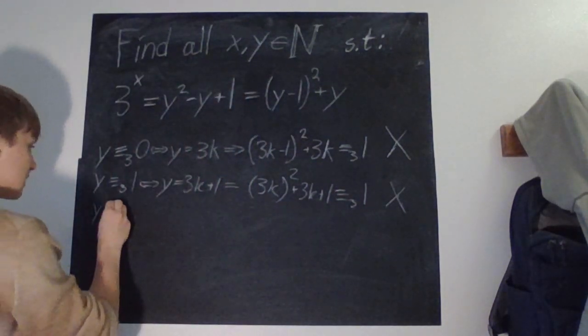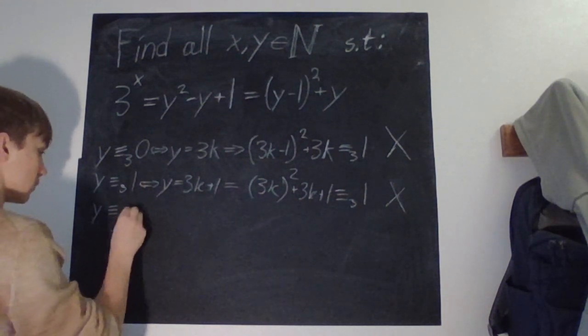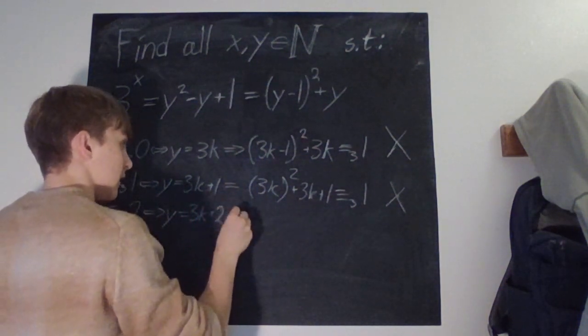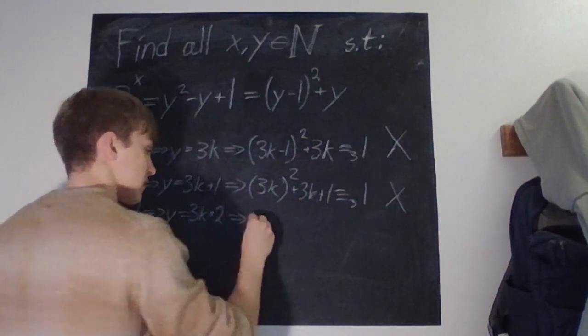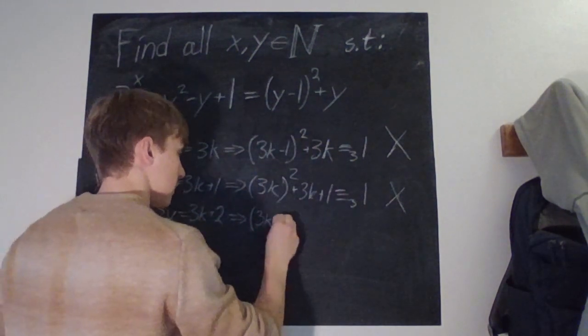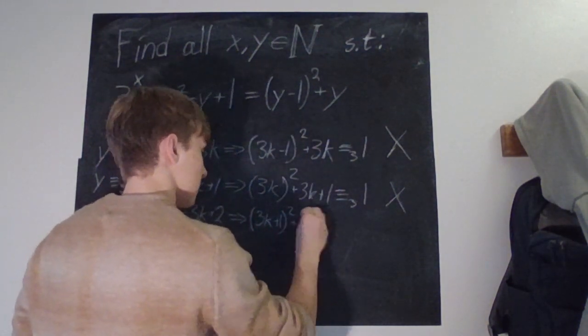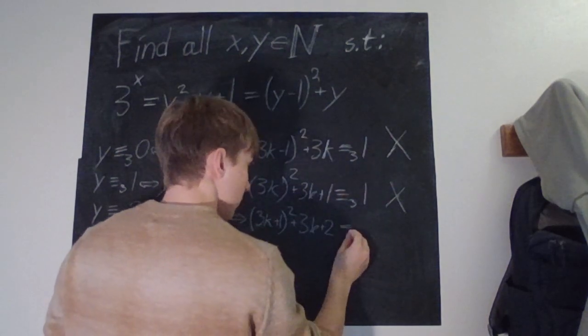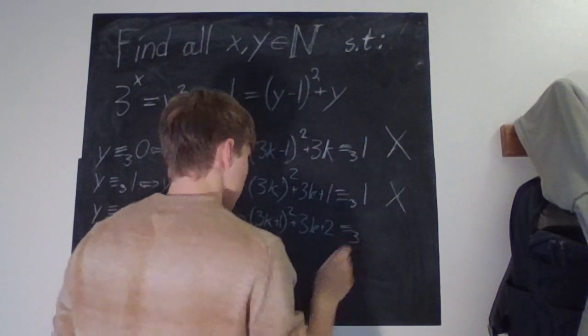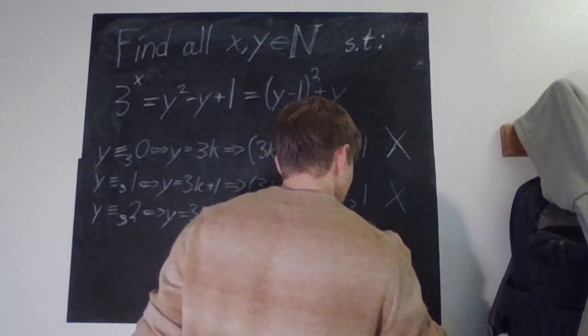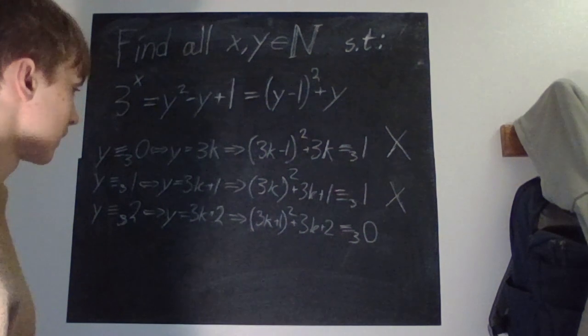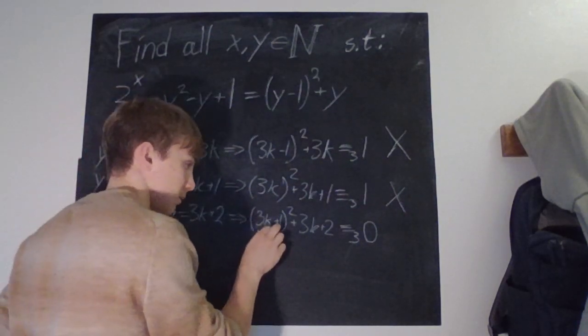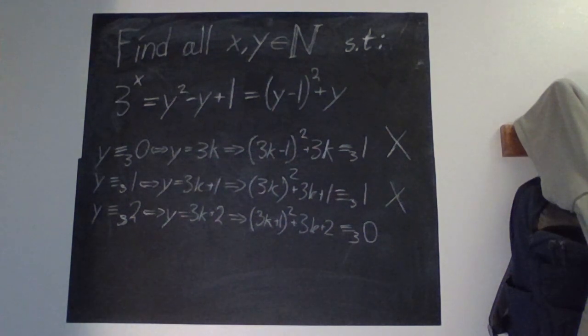And then we have the third case, the last case, y modulo 3 is equal to 2, which is equivalent to y being equal to 3k plus 2, which gives us 3k plus 2 minus 1, so we have 3k plus 1 squared plus 3k plus 2. And what is that modulo 3? Well, frankly, that modulo 3 is 0. Ta-da! So this is the only case that works, because this becomes plus 1 and that's plus 2, and that's 3, so it's equal to 0.